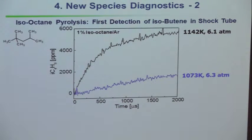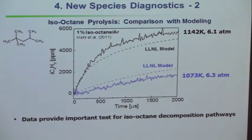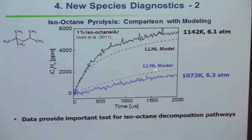It's hard when there are multiple paths and multiple species. If we ask how good the models are and take the Lawrence Livermore National Laboratory model — it's actually not that bad, though it seems to be high at low temperatures and low at high temperatures. Again, experiments done properly are usually the way people improve their models.